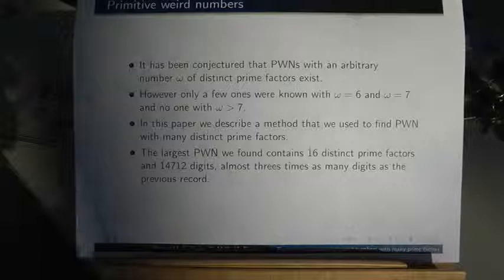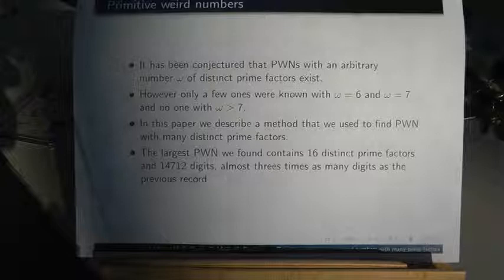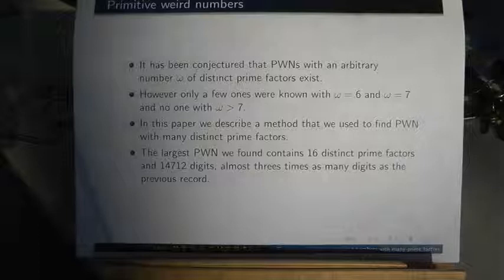It has been conjectured that primitive weird numbers with an arbitrary number of distinct prime factors should exist. However, only a few were known with 6 and 7 distinct prime factors, and none with more than 7 distinct prime factors.